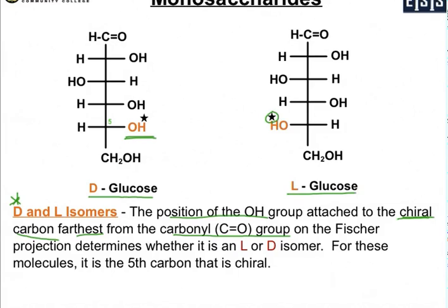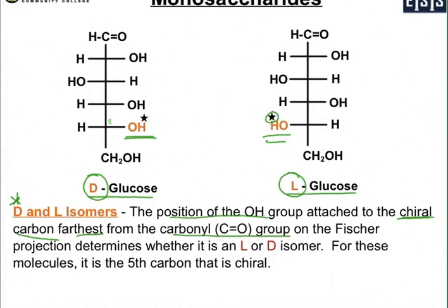If the OH on carbon five is on the right, you have the D form. If it's on the left, you have the L form. D and L don't literally mean right and left — they have other meanings in Greek — but just remember: if the OH in your sugar is on the right on this fifth carbon, you have a D form of that sugar, and L is if it's on the left.